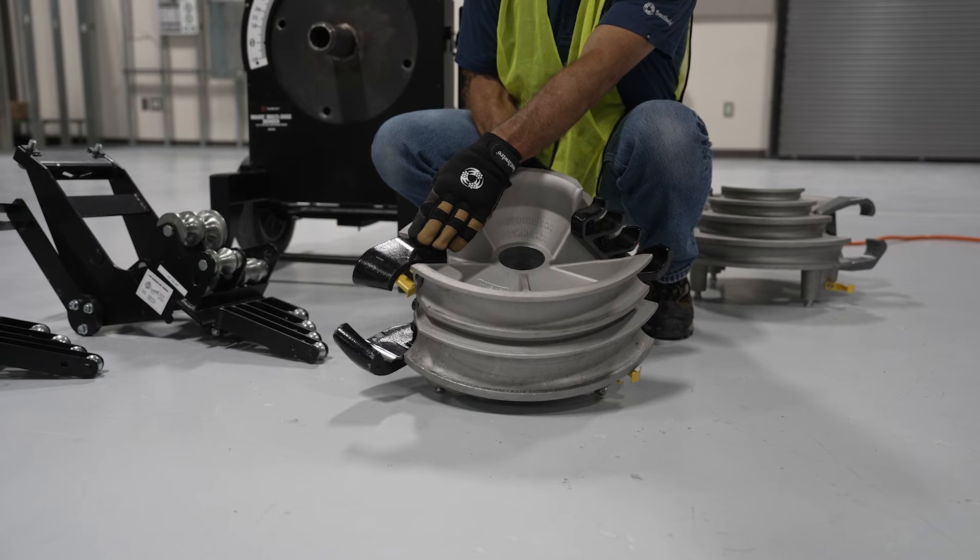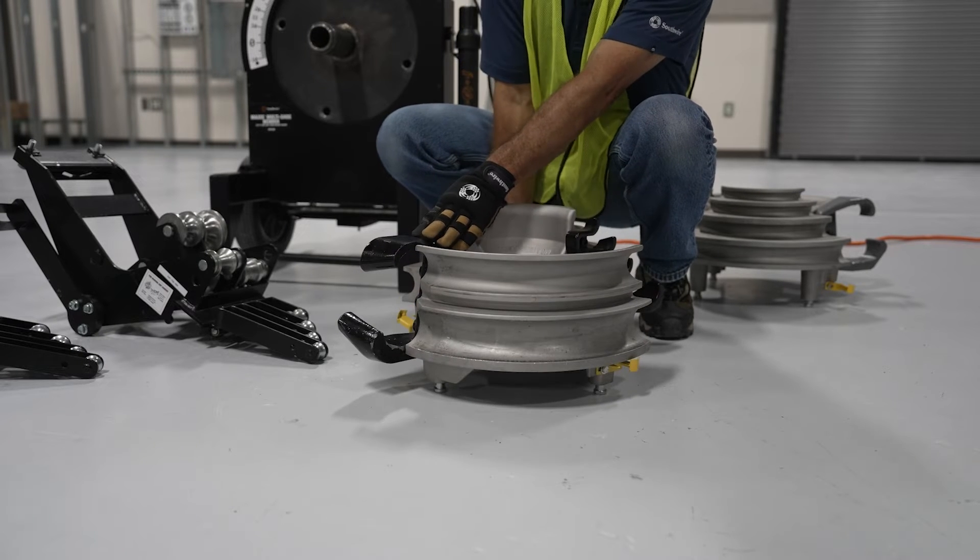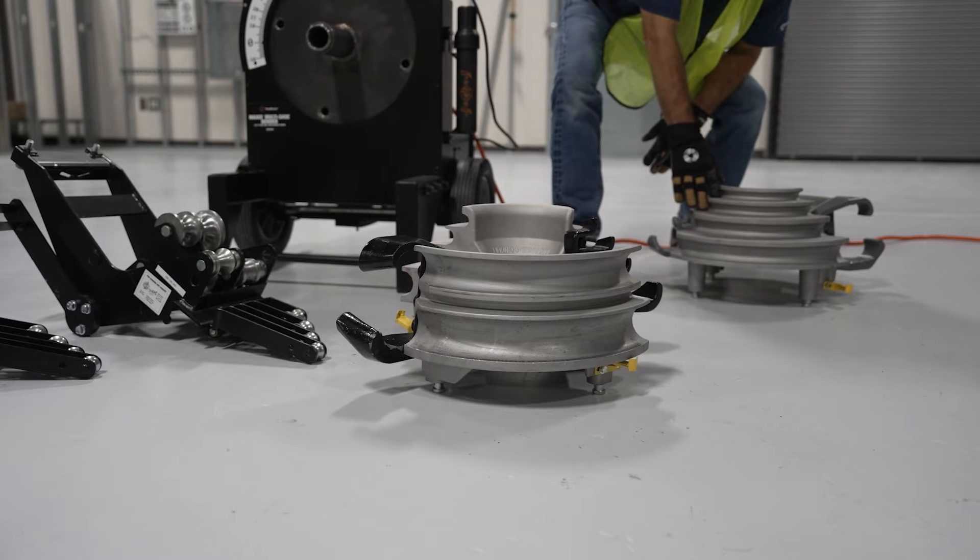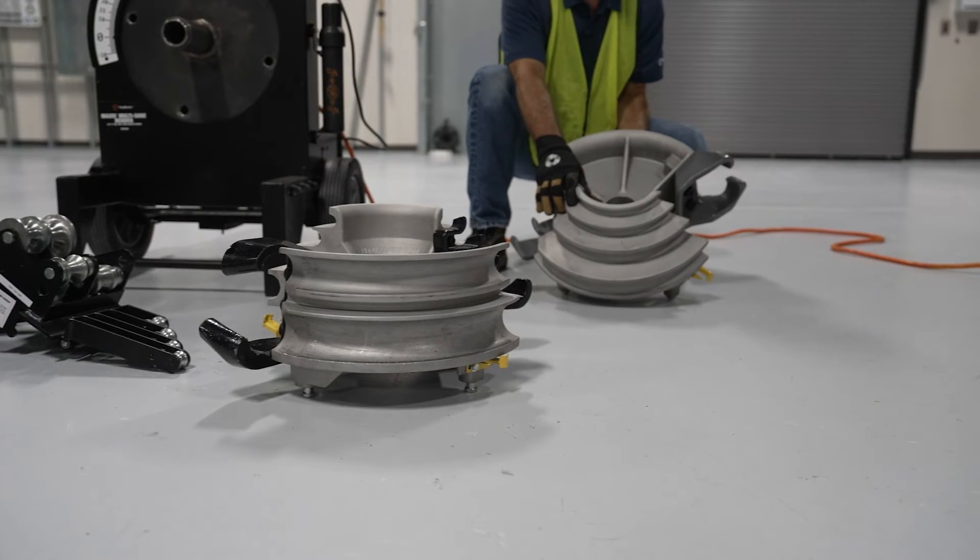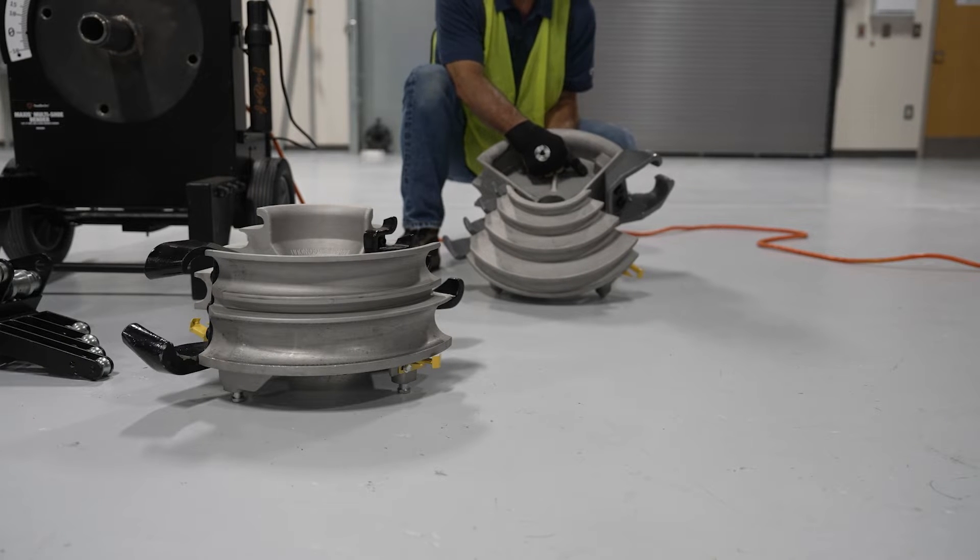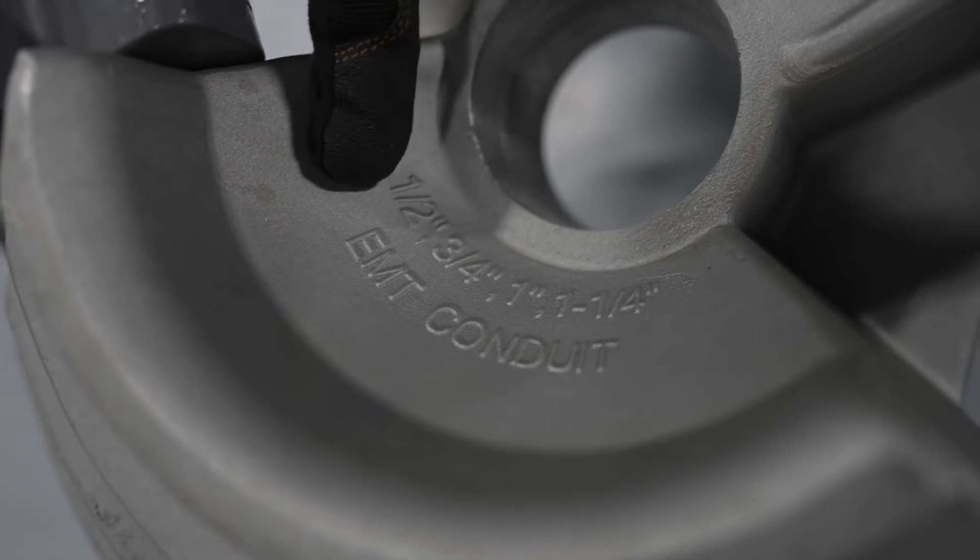Notice the IMC shoe has a black hook and the EMT shoe has a gray hook. Also, if you just look in the center of the shoe, it identifies the type of conduit that the shoe bends. This one says for bending EMT conduit.